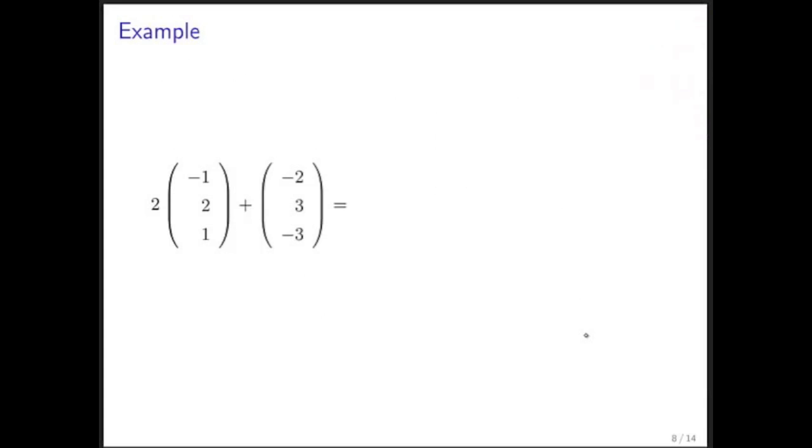Let's do an example. Here we have two vectors of size 3. We do two times the first vector, adding it to the second vector. The result of which is negative 2, 4, 2, if we just scale the first vector, which then must be added to the second vector.